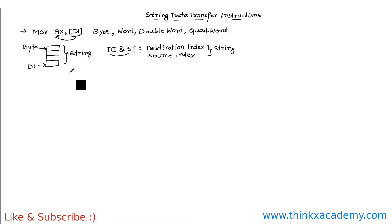These registers basically deal with string operations. The destination index represents the destination of a string, and the source index represents the source of the string. So if we want to perform a string operation and transfer strings of bytes, we use the source index register, which will initially point to the first element — the source. It points to that location inside memory, and we update it to point to the next item until the whole string has been covered.